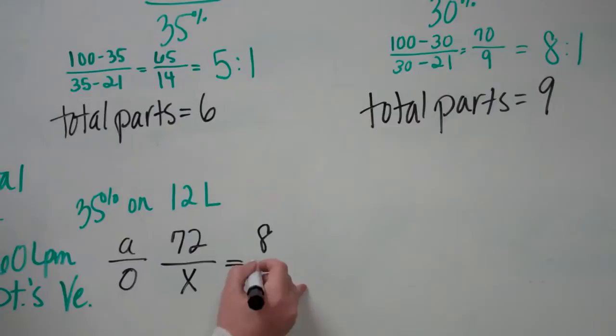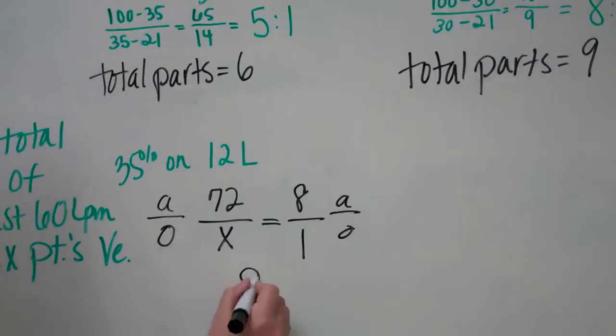My ratio is 30—I need 30%—so what I want is an 8 to 1 ratio, air over oxygen.